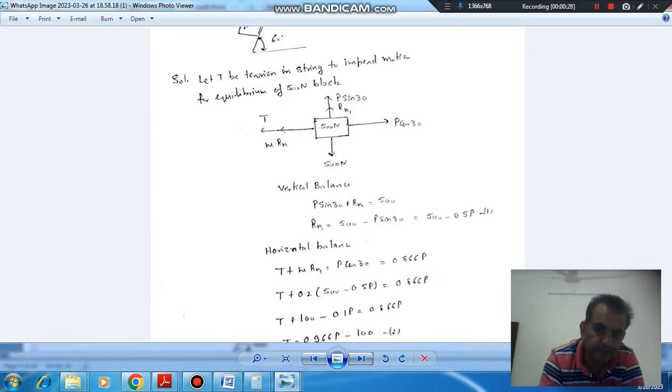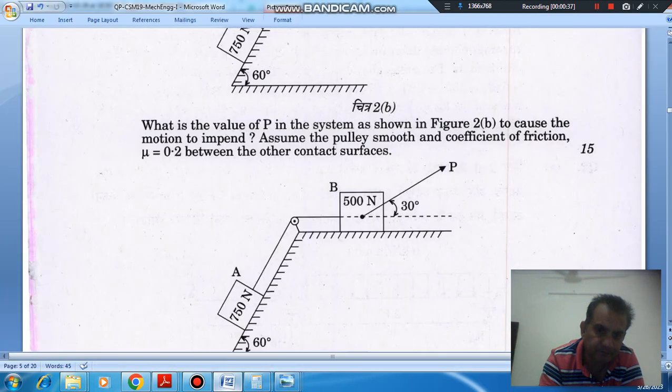So here, there are two blocks, one is of 500N and the other is 750N on an inclined table. And the force applied is P, at an angle 30 degree.